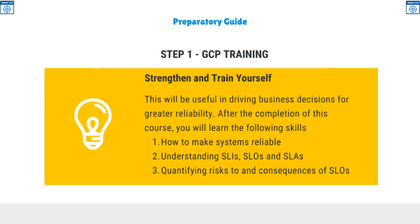Second, GCP training. Google Cloud Platform offers a course which teaches service level objectives theory. Candidates will be trained with principles in describing and measuring the desired reliability of a service. This course also guides candidates with the use of service level indicators (SLIs) to quantify reliability and error budgets. The course helps you gain expertise in the components of SLIs and developing SLIs and SLOs for a service. After completion, you will learn: how to make systems reliable; understanding SLIs, SLOs, and SLAs; and quantifying risks to and consequences of SLOs.